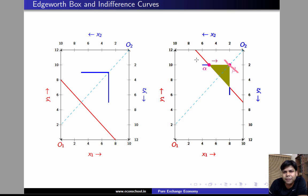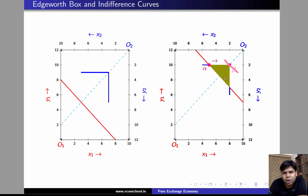This kind of reasoning can help us eliminate any point lying above the 45-degree line, and we can clearly say that none of these points are efficient. The reasoning is exactly the same for points lying below the 45-degree line. So none of the points lying above or below this line are efficient.